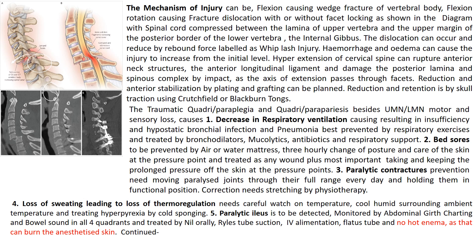The axis of extension-flexion passes through the facets, so anterior to the facets there is distraction and posterior to it there is impaction. Reduction and anterior stabilization by plating and grafting can be planned, and reduction and retention can also be done by skull traction using Crutchfield tongs or Blackburn tongs.